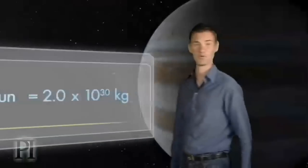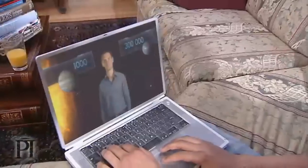So what does this number really mean? Only that the sun is 1,000 times the mass of Jupiter and 300,000 times the mass of Earth.